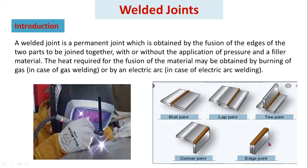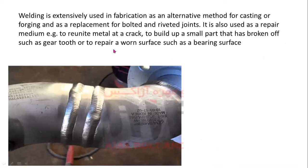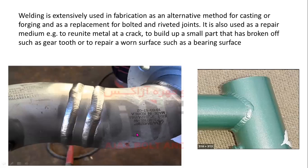These are examples of welded joints. Welding is extensively used in fabrication as an alternative to casting or forging, and as a replacement for bolted and riveted joints. It is also used as a repair medium — for example, to fill a crack in metal, to build up a small part that has broken off such as a gear tooth, or to repair a worn surface such as a bearing surface.